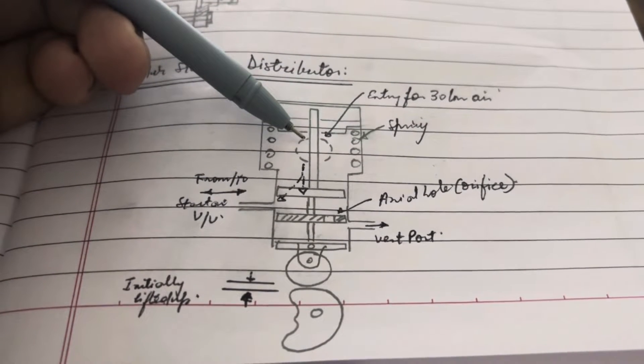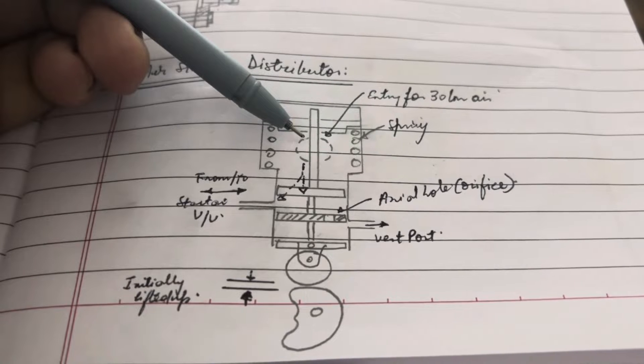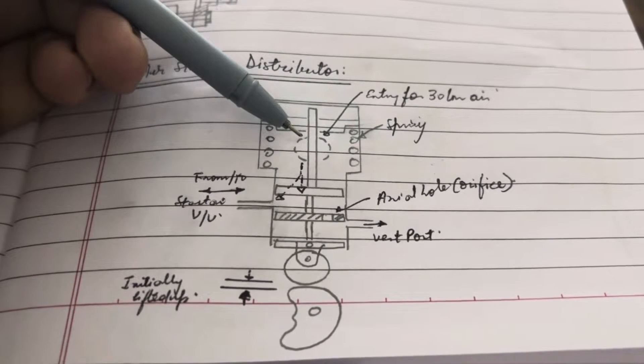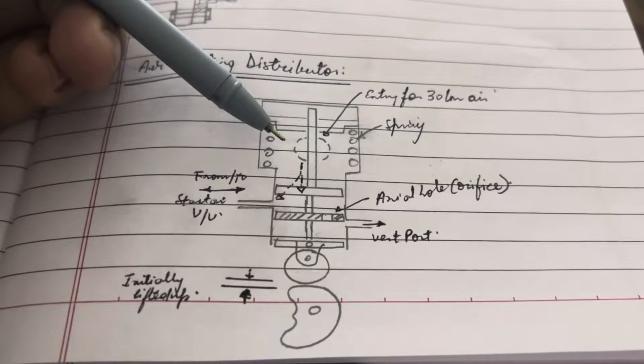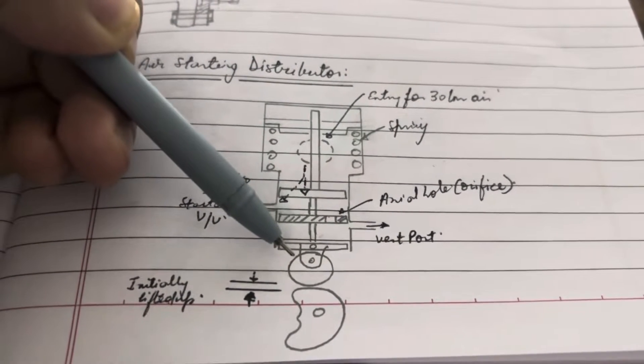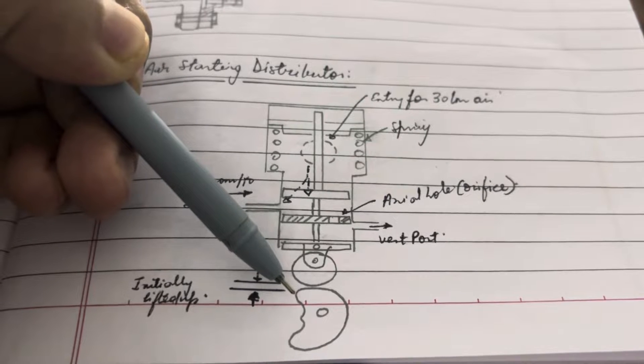At any given point of time, the roller is not always in contact with the cam surface if there is no air pressure. It is only when the 30 bar air pressure enters from here and pushes down the piston that the roller comes in contact with the cam profile.